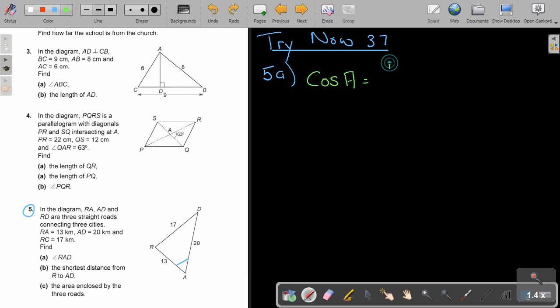It's going to be 13 squared plus 20 squared minus 70 squared. Let's just correct it. Minus 70 squared, divide 2 times 13 times 20.